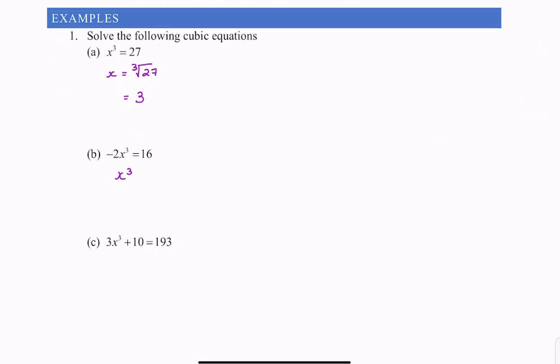So I get x cubed equals 16 divided by negative 2, which is negative 8. And now I'm going to find the cubed root of negative 8. You can find the cube root of negative 8 - it's not like finding the square root of something. Pop that in your calculator and your calculator will give you the answer of negative 2.